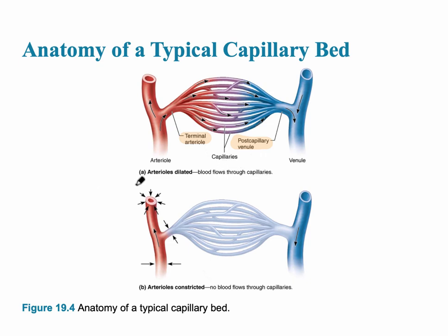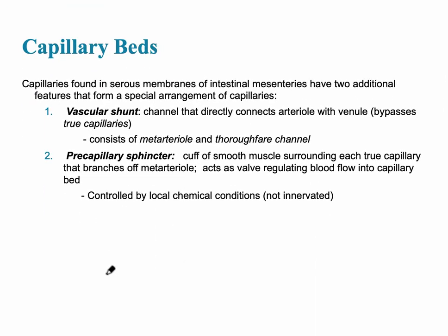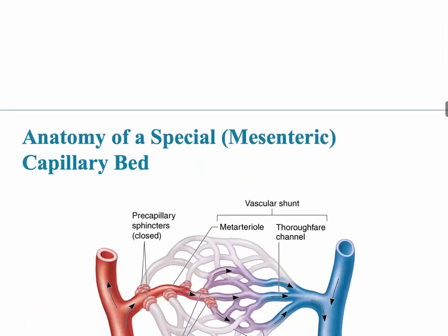Letter A is showing the arterial is dilated, and B is showing the arterial is constricted, where no blood is going into that capillary bed. Capillaries are found in serous membranes, including the serous membranes of intestinal mesenteries, which have two additional features. There's what's called the vascular shunt — the channel that directly connects the arteriole with the venule, bypassing the true capillaries. There's also the pre-capillary sphincter, which are cuffs of smooth muscle that constrict or dilate to allow more blood to go into that capillary bed.